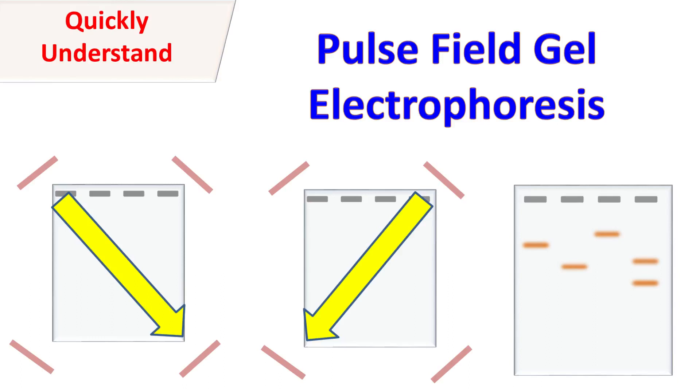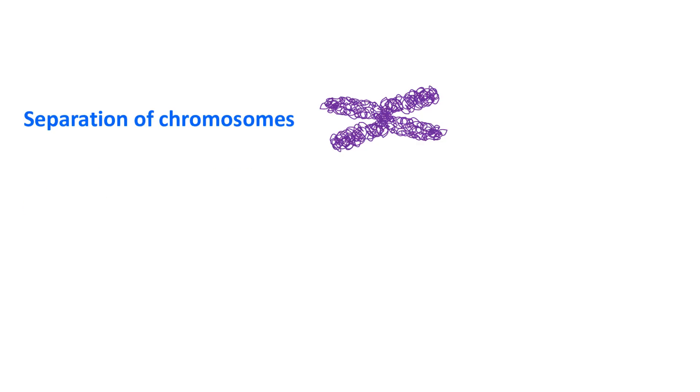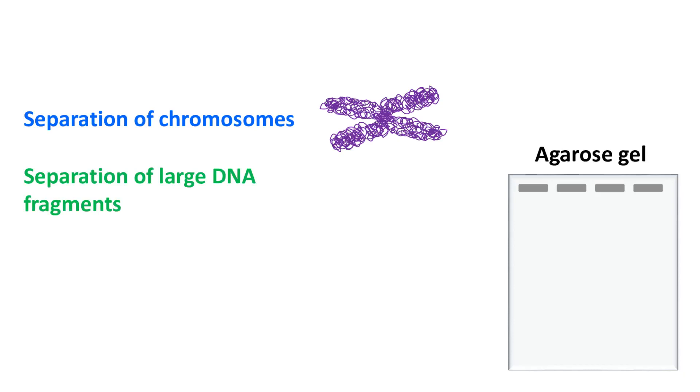Pulsed Field Gel Electrophoresis is a common technique used for the separation of chromosomes and large DNA fragments. The separation of DNA is usually carried out by agarose gel electrophoresis.